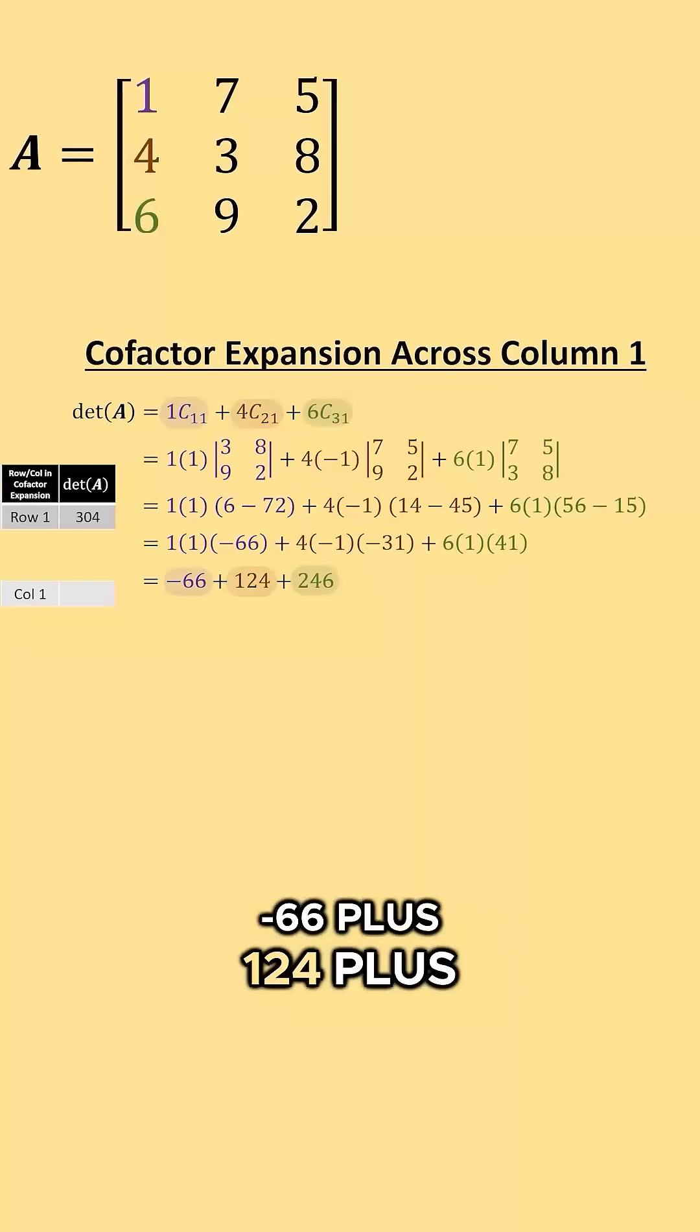Negative 66 plus 124 plus 246 is equal to 304.